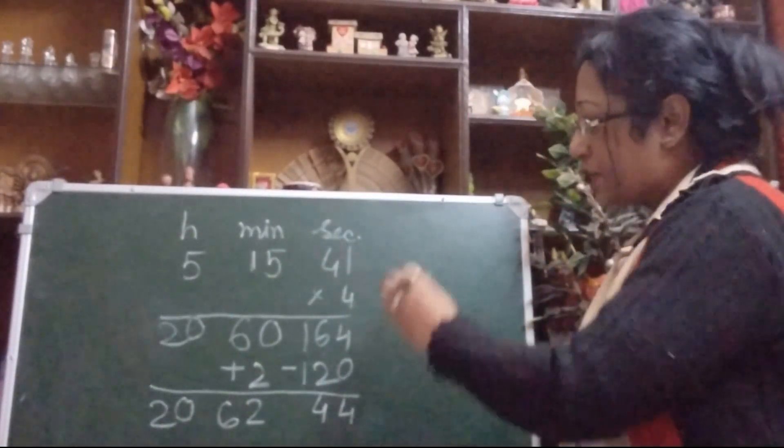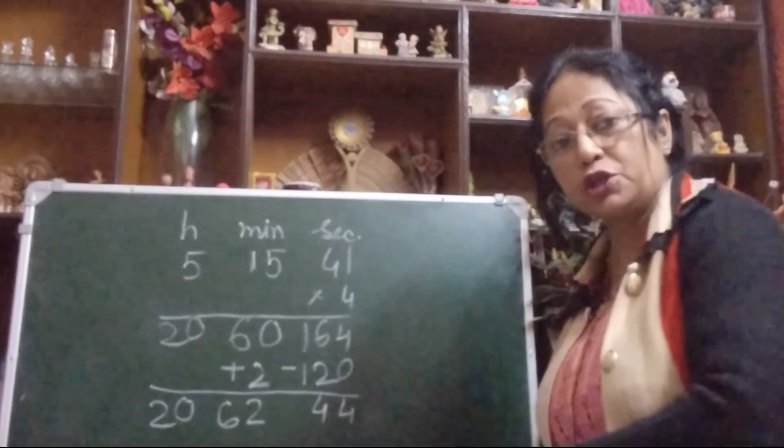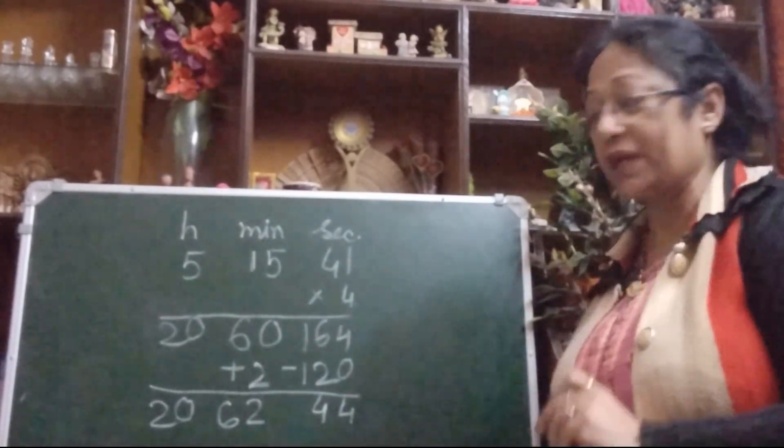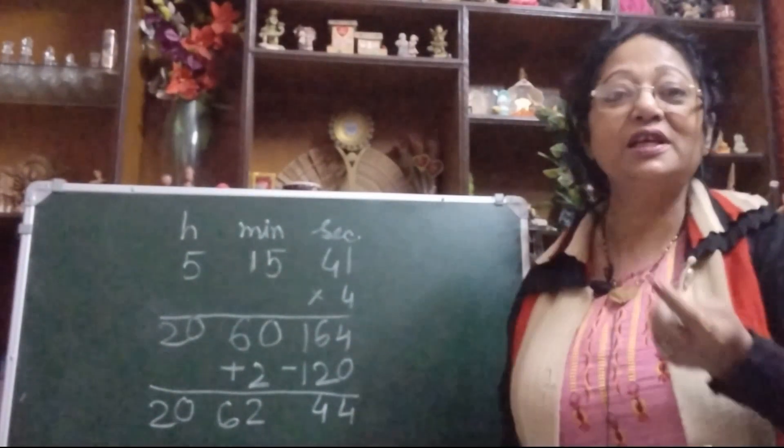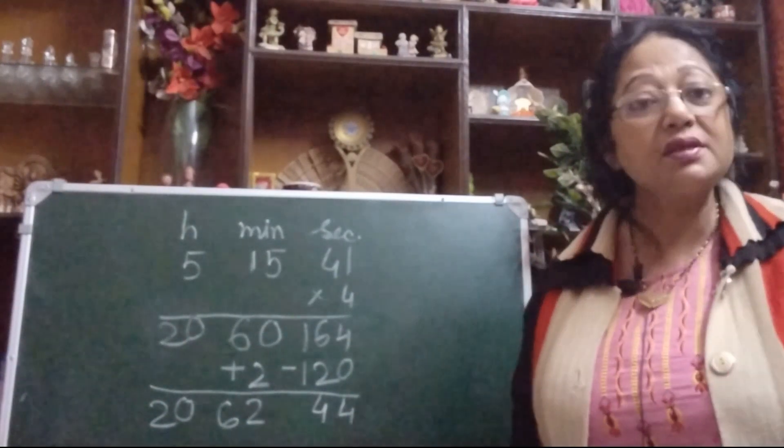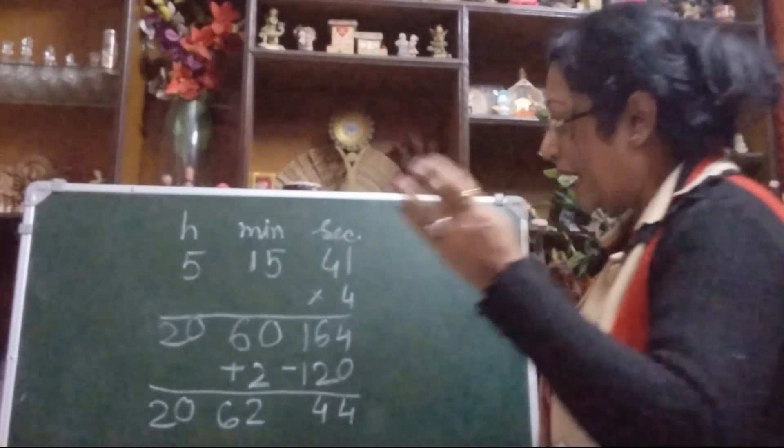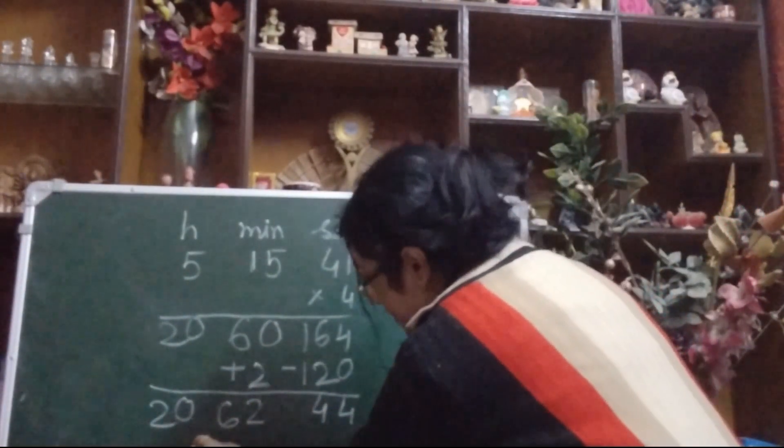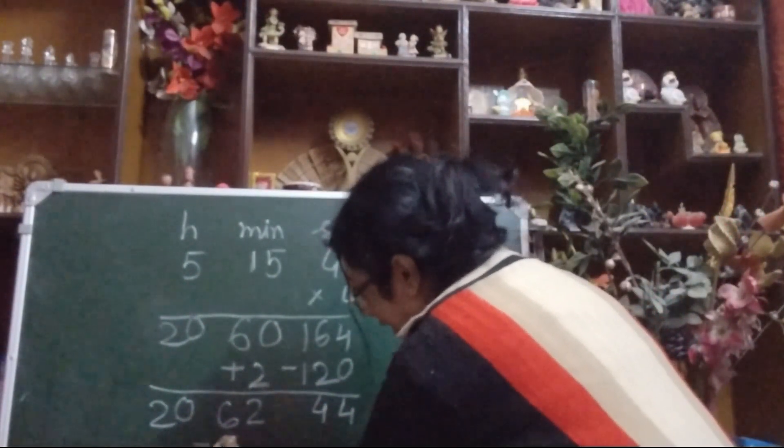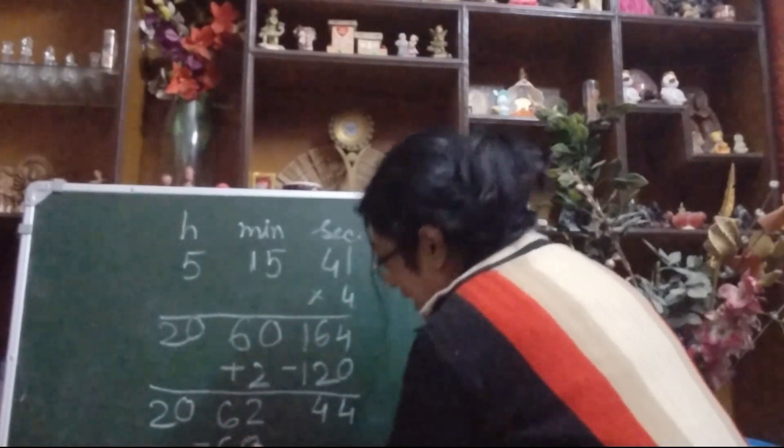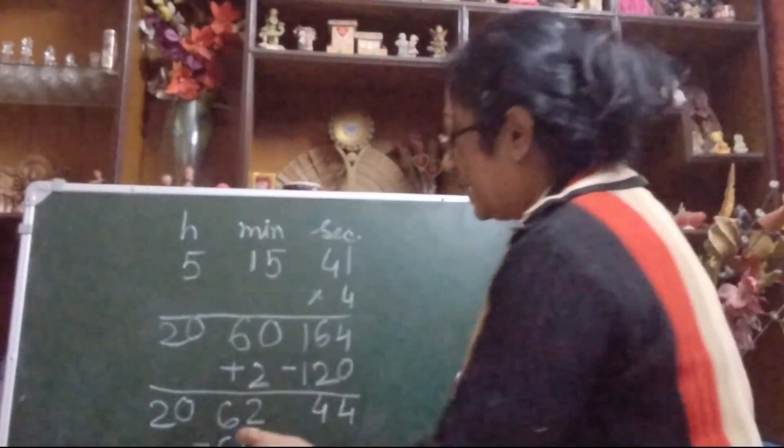Now see, it is 20 hours, 62 minutes, and 44 seconds. Again there is a problem: 62 minutes. 60 minutes means one hour. So simply take 60 minutes from 62 minutes, and 60 minutes means one hour. Again return it back.